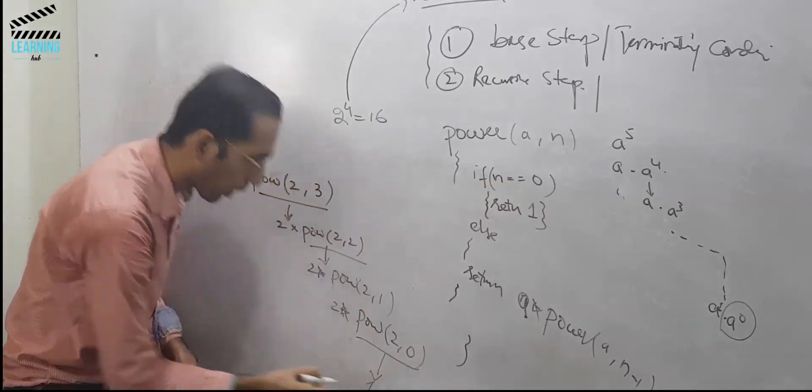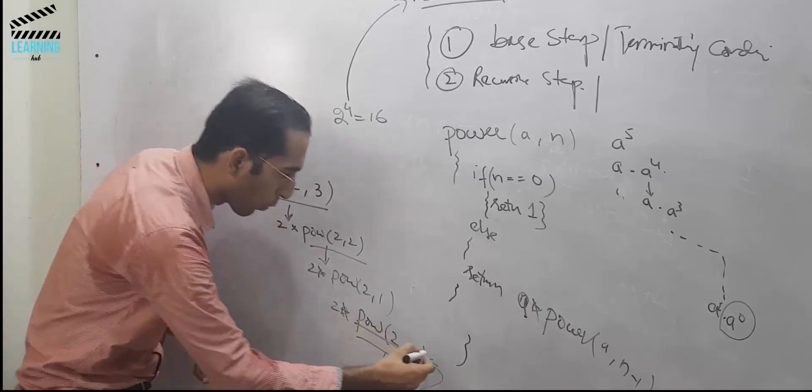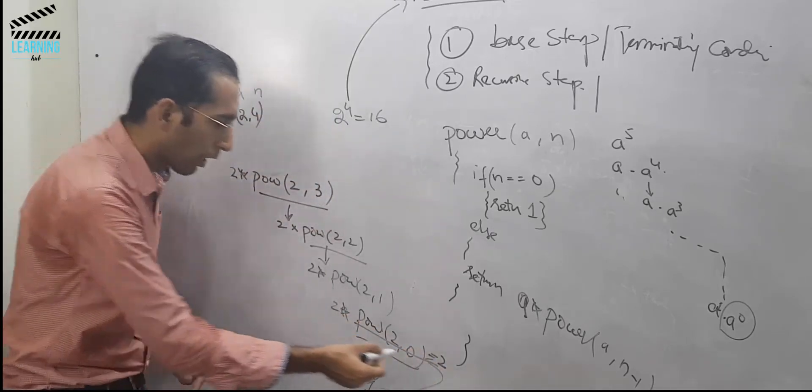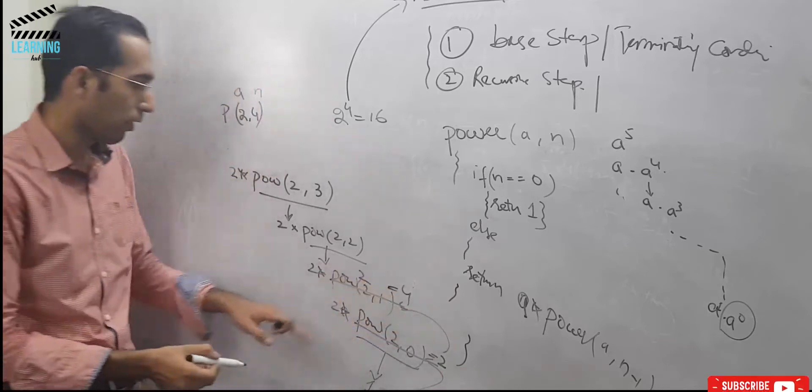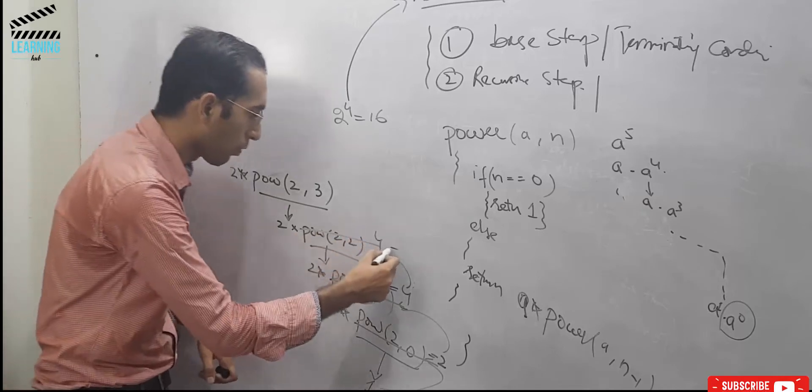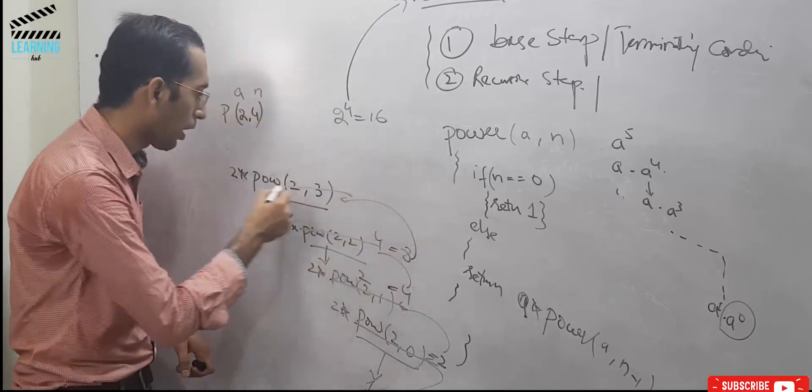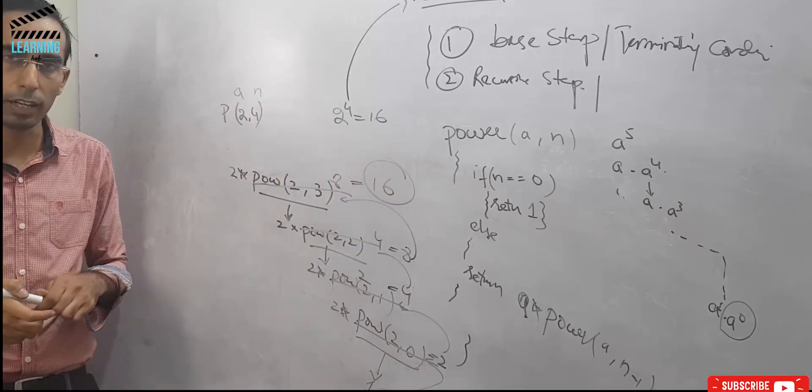This is 1. This 1 here replaces: 2 into 1 is equal to 2. This 2 here replaces: 2 into 2 is equal to 4. This 4 here replaces: 4 into 2 is equal to 8. This 8 here replaces: 8 into 2 is equal to 16 and we have the final answer.